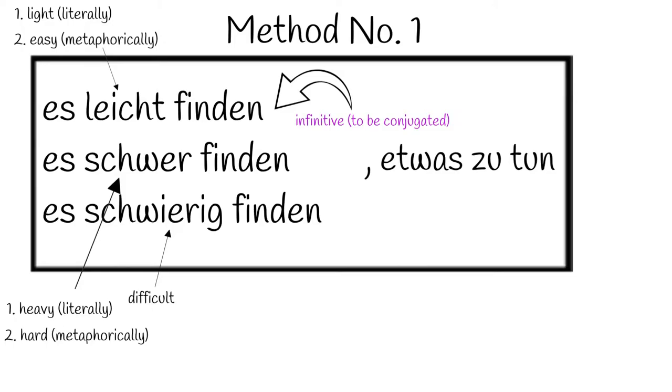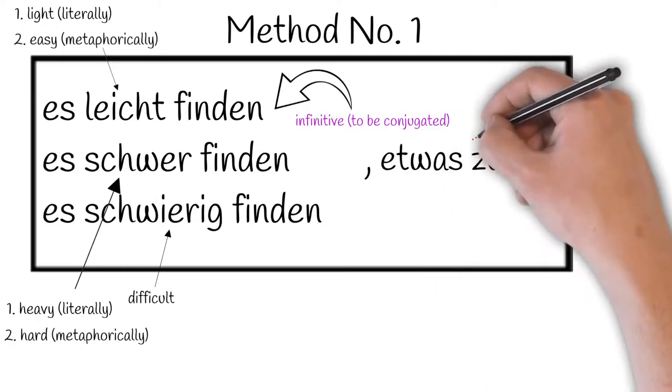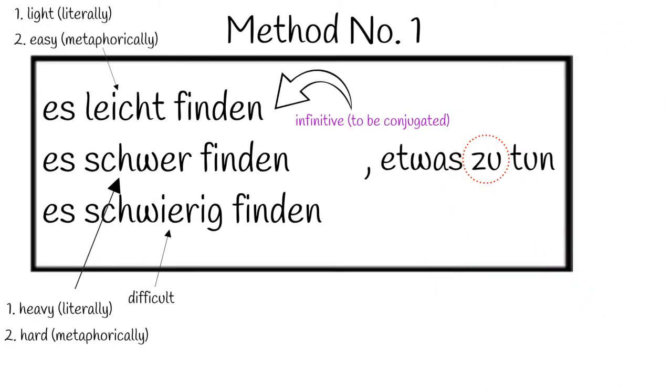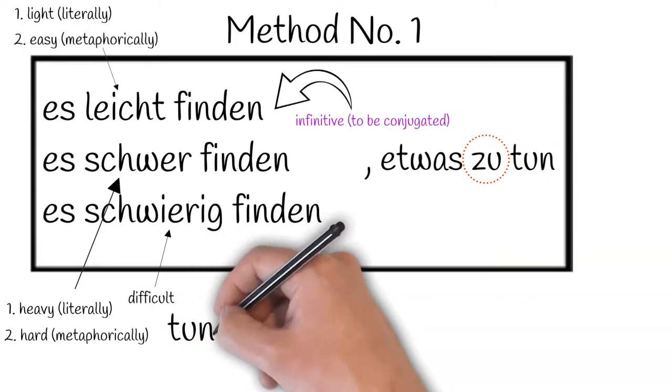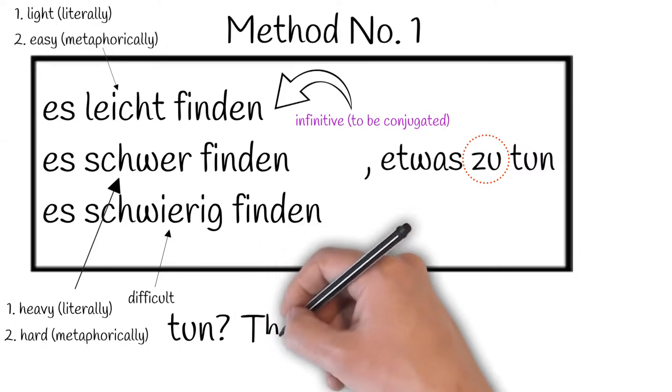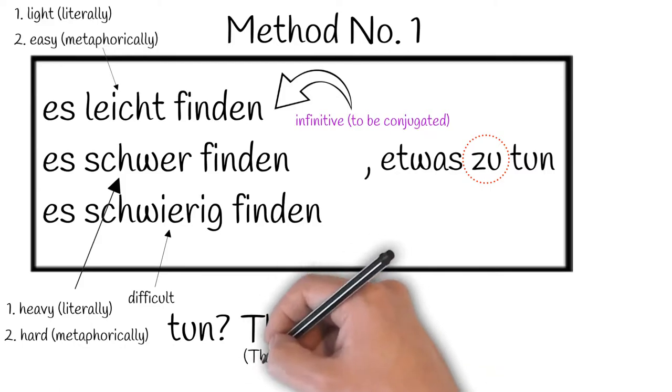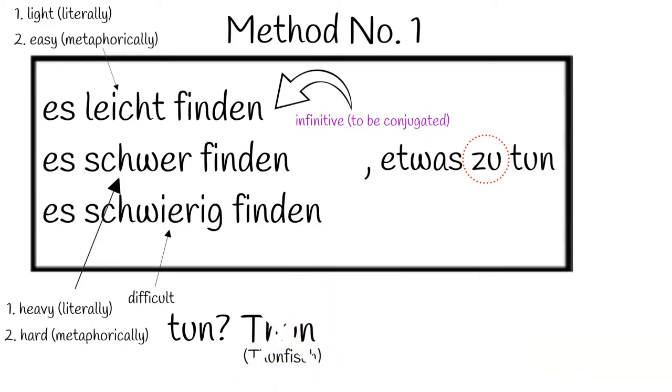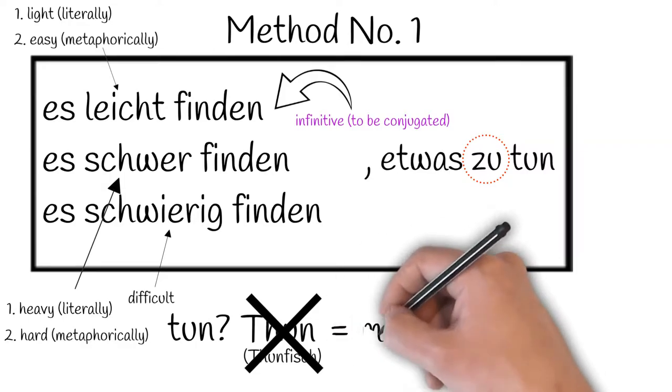Now let's look at the second part. Etwas simply means something. Zu, you should know, means two, and this word tun can seem a little perplexing. Tun is actually a verb. It's got nothing to do with the German word tun, as in tuna fish, which is pronounced exactly the same. But rather it's a synonym for machen. It just means to do.